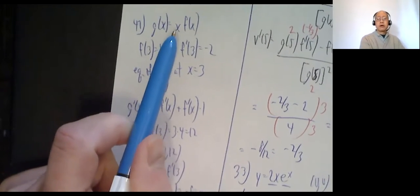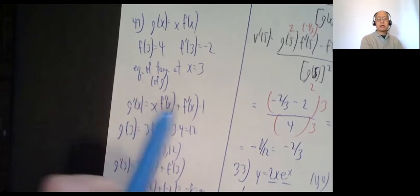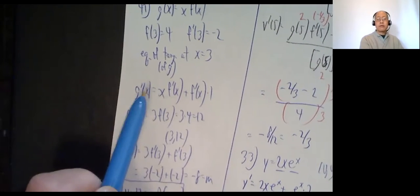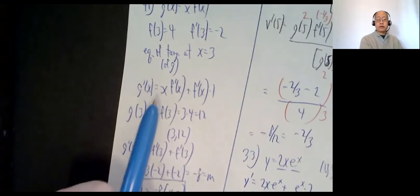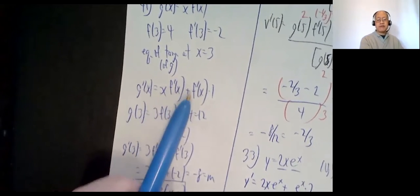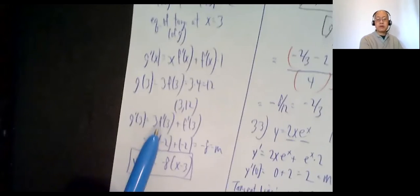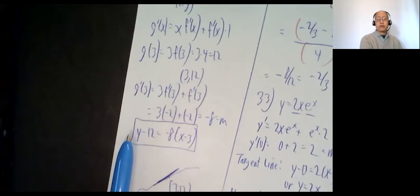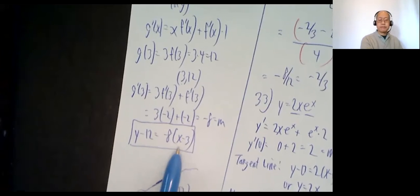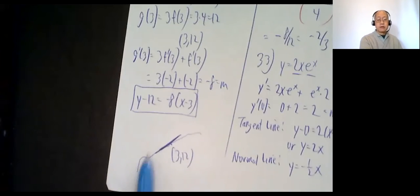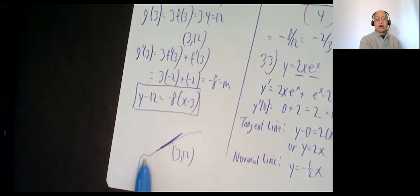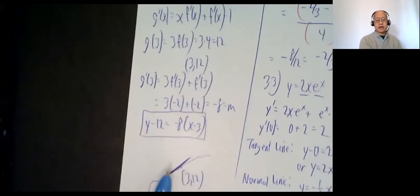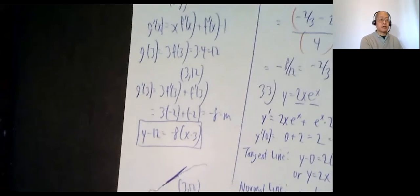I need the slope. So g prime of x by the product rule: first times the derivative of the second — x times f prime of x — plus the second function f of x times the derivative of the first, which is 1. Plug in 3: 3 times f prime of 3, plus f prime of 3. F prime of 3 is negative 2, so that's 3 times negative 2 plus negative 2, which is negative 8. So slope is negative 8, point is (3, 12). y minus y₁ equals m times x minus x₁.